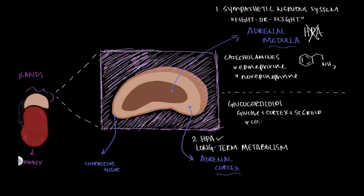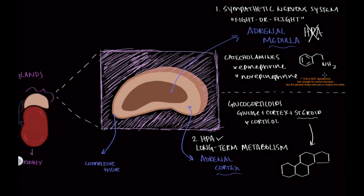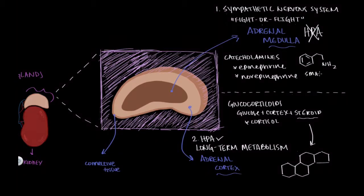The main glucocorticoid produced is cortisol. To point something out, I'm going to draw out the general structure of a steroid and highlight a huge size difference between these two types of molecules. Catecholamines produced by the adrenal medulla — the one drawn here is epinephrine — are much smaller than the glucocorticoids produced by the adrenal cortex. I like to think of catecholamines as small and fast, because the adrenal medulla is controlled by the sympathetic nervous system and therefore reacts very quickly to stress.